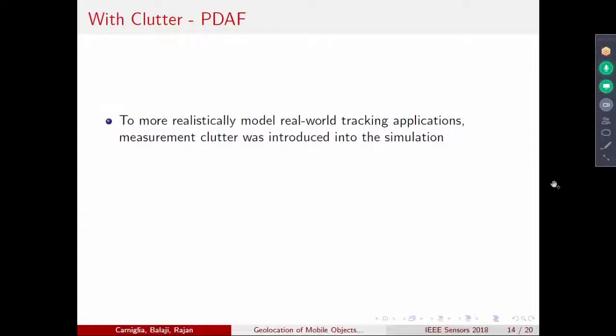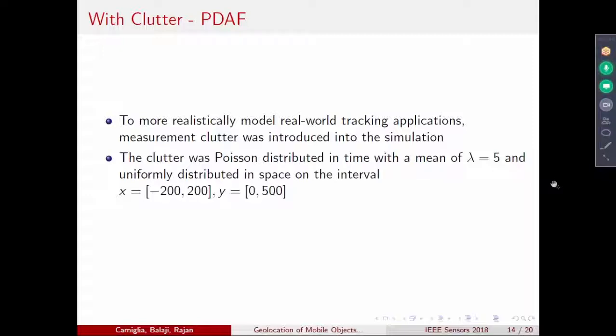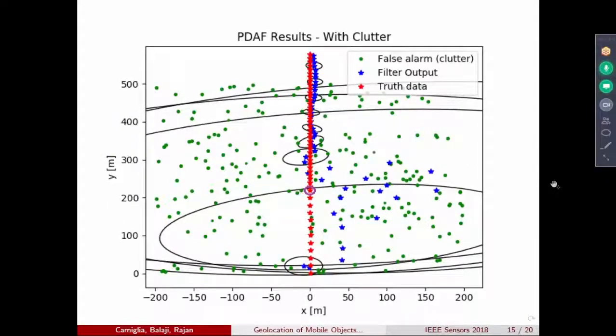Normally, this is not the case because you have clutter coming from everywhere. We did a simulation with measurement clutter. For that, we used a Poisson distribution with mean time of arrival lambda equal to 5, uniformly distributed in the space between minus 200 and plus 200 on the x-axis, 0 and 500 on the y-axis. We used a probabilistic data association filter to run all the true and false measurements. That's what is shown here. You see the false alarms, which is the clutter. As you see, up to the 11 measurements, the error probability is large. After that, the error probability reduces. If you don't have the second drone, you will have huge error probability, which is a bigger ellipse. Thereby, you will never be able to correctly track this target.